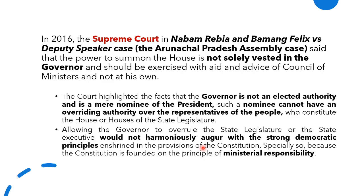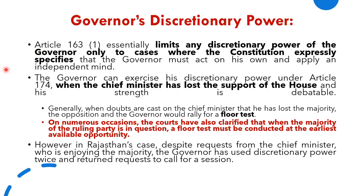The Supreme Court also gave a judgment in 2016, saying that the power to summon the house is not solely vested in the governor and should be exercised with the aid and advice of the Council of Ministers, and not at his own discretion. The governor is not an elected authority, so the elected representatives in the ruling government must move on the aid and advice principle. In this case, the governor is returning the aid and advice, making it a discretionary power — taking decisions himself rather than on the advice of the ministers.